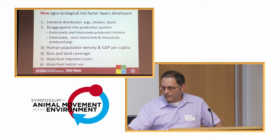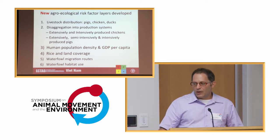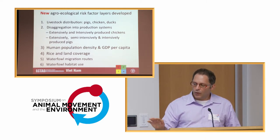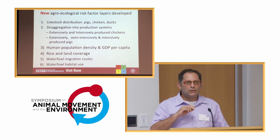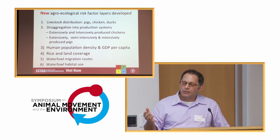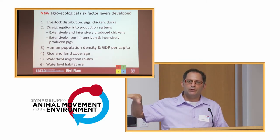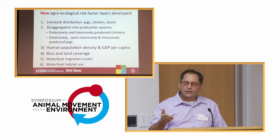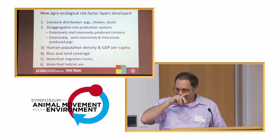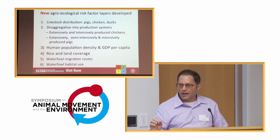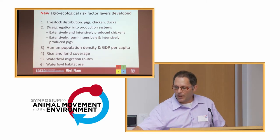The livestock distributions data layer is something FAO has been collecting for many years. For our discussion I'll focus on pigs, ducks, and chickens. We've disaggregated the data because animals are not produced in the same way — sometimes in intensive ways, other times in less structured, low-biosecurity systems. This actually lends itself to understanding disease dynamics and the potential for introduction or spillover events. We've also incorporated human population density, rice coverage, and waterfowl migration routes and habitat use.